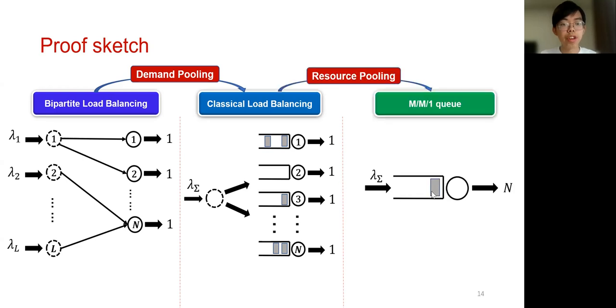Then to show that JSQ can achieve optimal delay, we further show that it can lead to a phenomenon called resource pooling. That is, we are able to show rigorously that the system dynamic is approximately equal to an M/M/1 queue where all servers are grouped into a big server of service rate n. Then the expected waiting time in this system is given by 1 over n times 1 minus lambda, and we can deduct back to show the optimal performance of JSQ in the original bipartite load-balancing model.